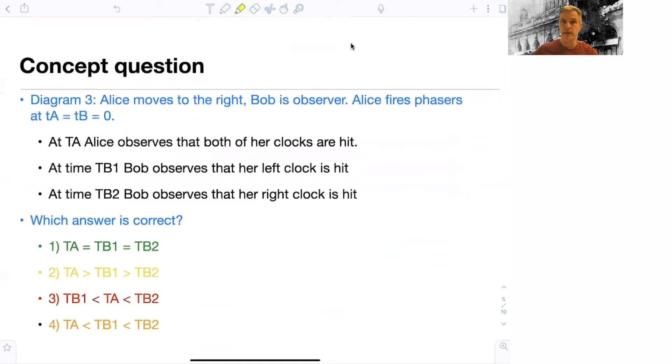So let's look at this in a concept question to just make sure that we're all on the same page. Again, we discuss here diagram three. Alice moves to the right. Bob is the observer. Alice fires her phasor at time equals zero. Then the situation unfolds. At time T A, capital T A, Alice observes that both clocks are hit. At time T B 1, Bob observes that the left clock is hit. At time T B 2, it's the right clock. Which of the following answers is correct? So here you want to stop the video and think about which of the answers is correct.